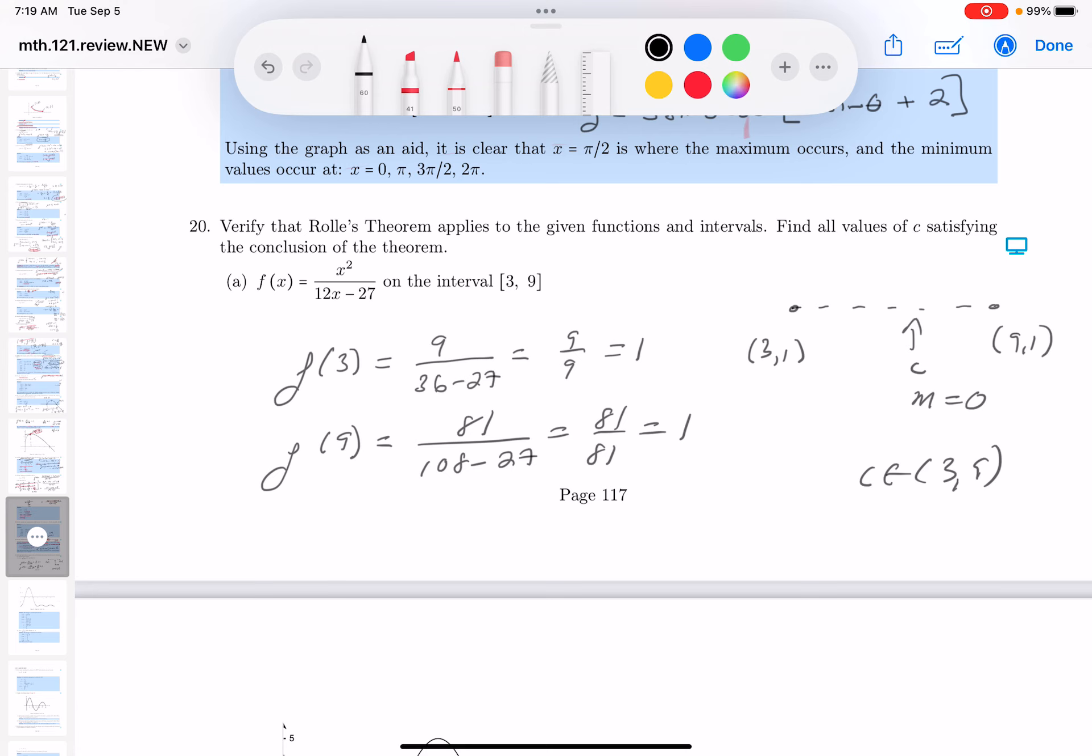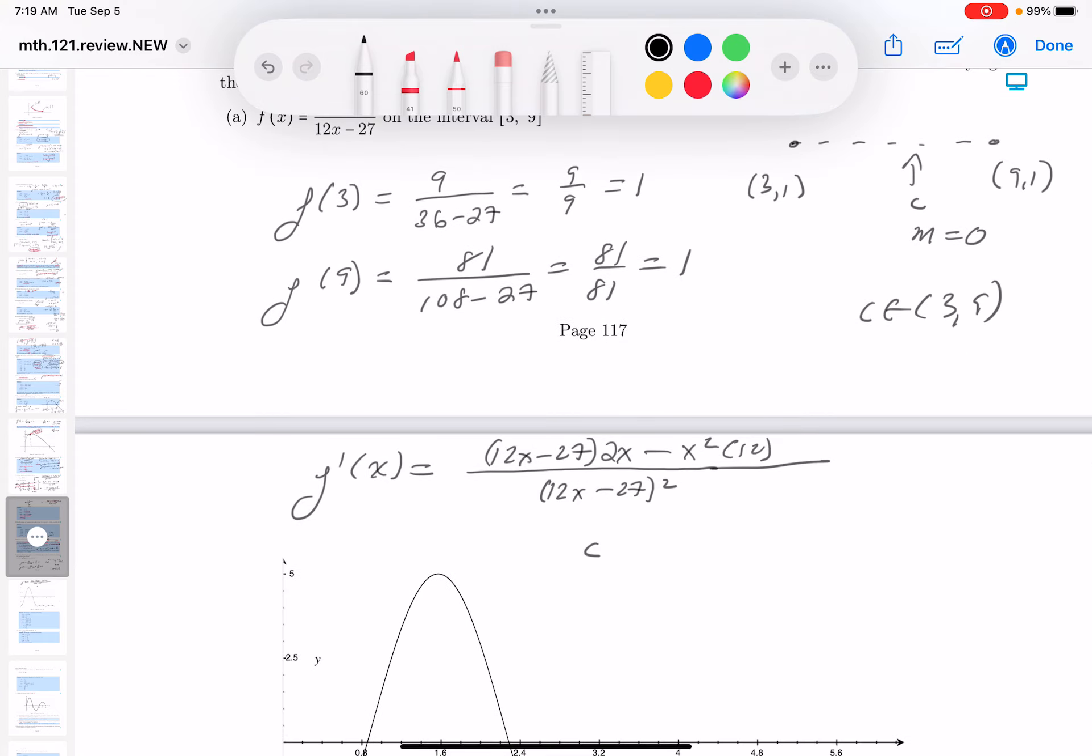Let's write that down. So I'm going to write down f prime of x. I'm going to square the bottom, bring the bottom to the top, times the derivative of the top, which is 2x, minus the top, times the derivative of the bottom, which is 12. All right. Now, I have to find a c. And again, the c is going to be contained. It's going to be between 3 and 9, such that f prime of c will be equal to 0.